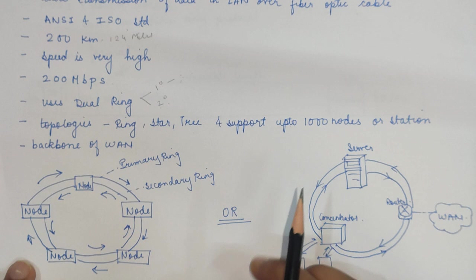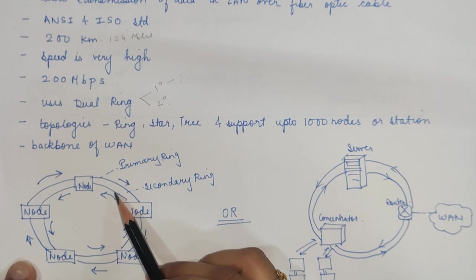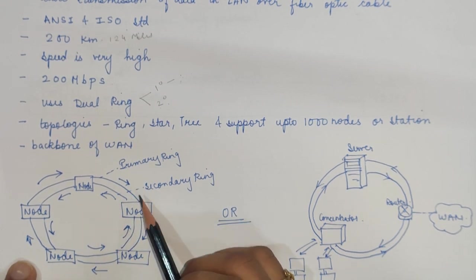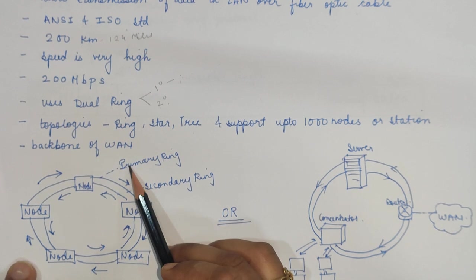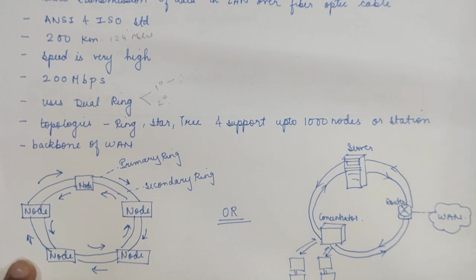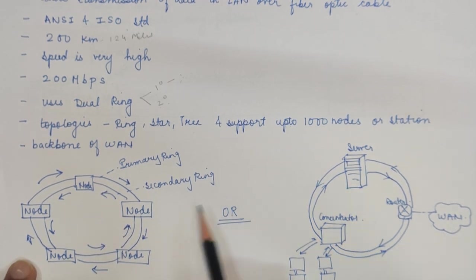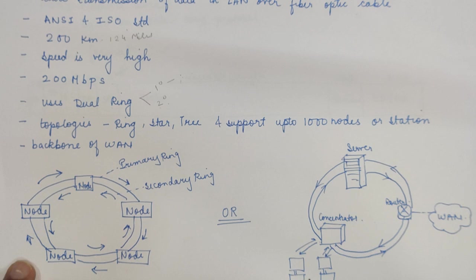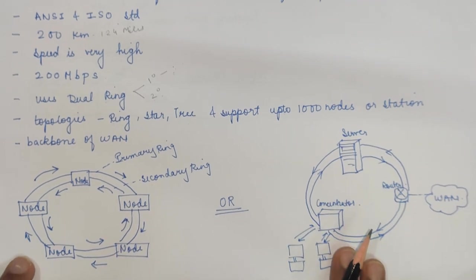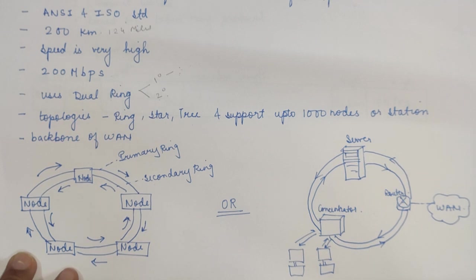Using this diagram, you can see there are two different rings — a primary ring and a secondary ring. Both rings rotate in opposite directions. The primary ring is mainly used for the transmission of data, whereas the secondary ring is used for backup. The nodes shown here can be servers, concentrators, or routers.